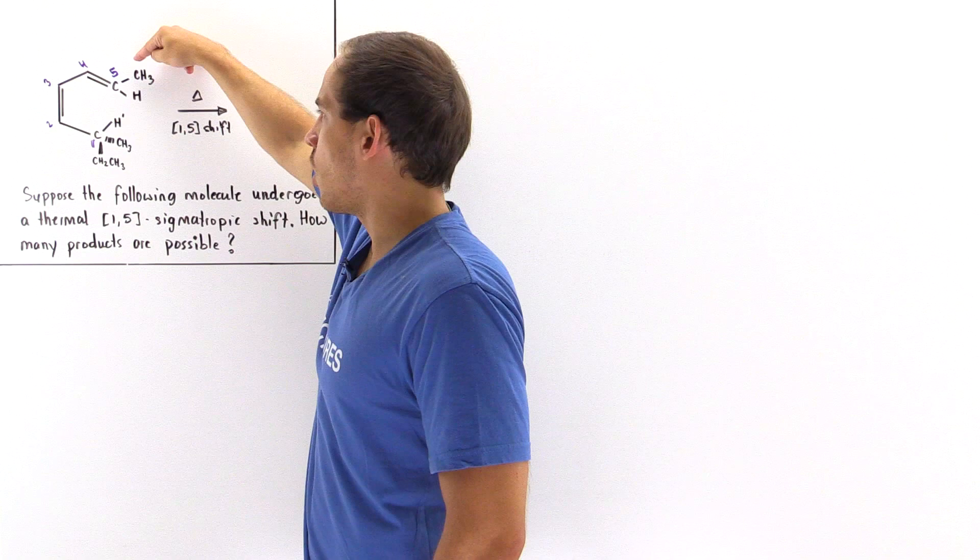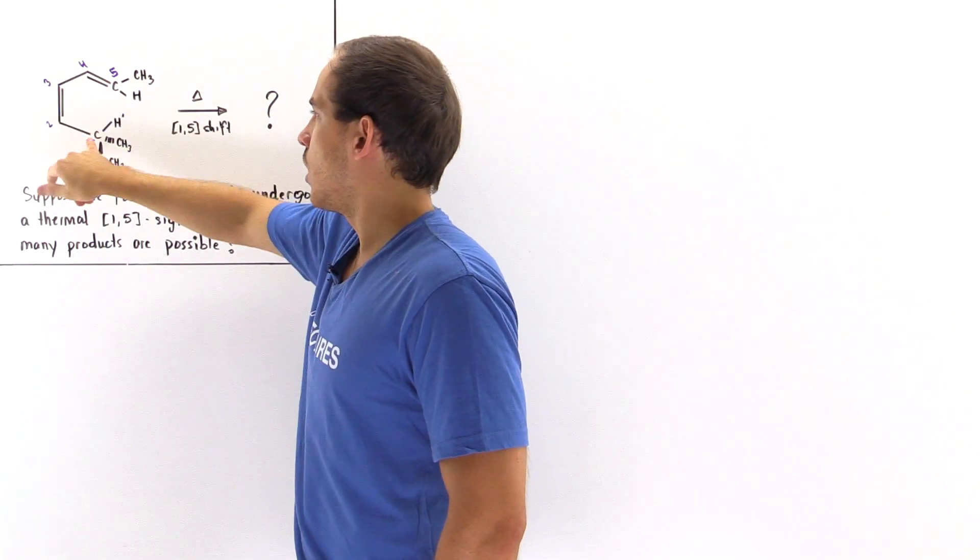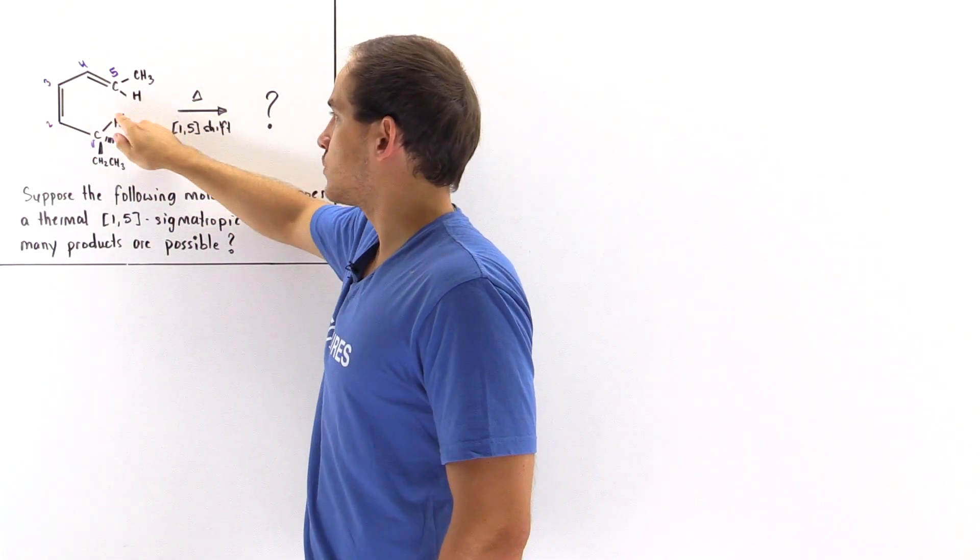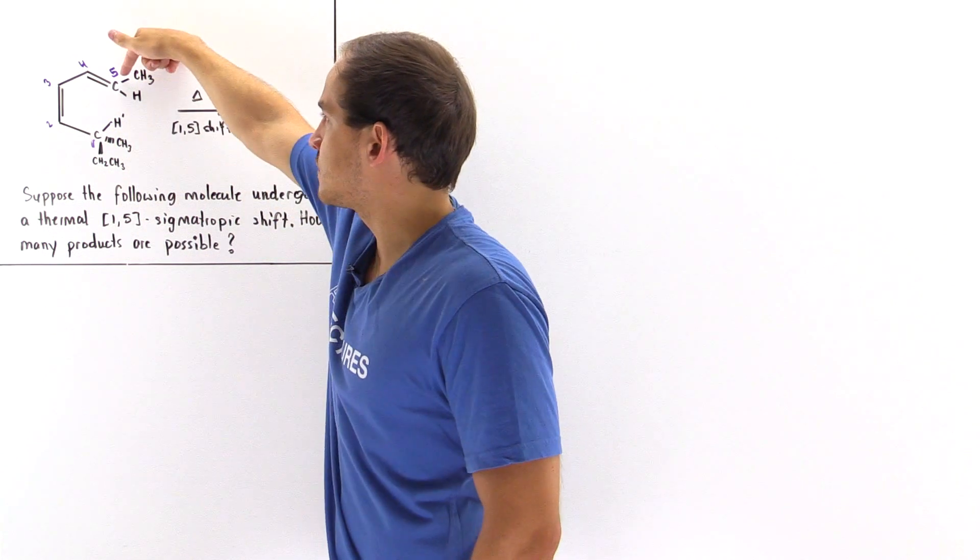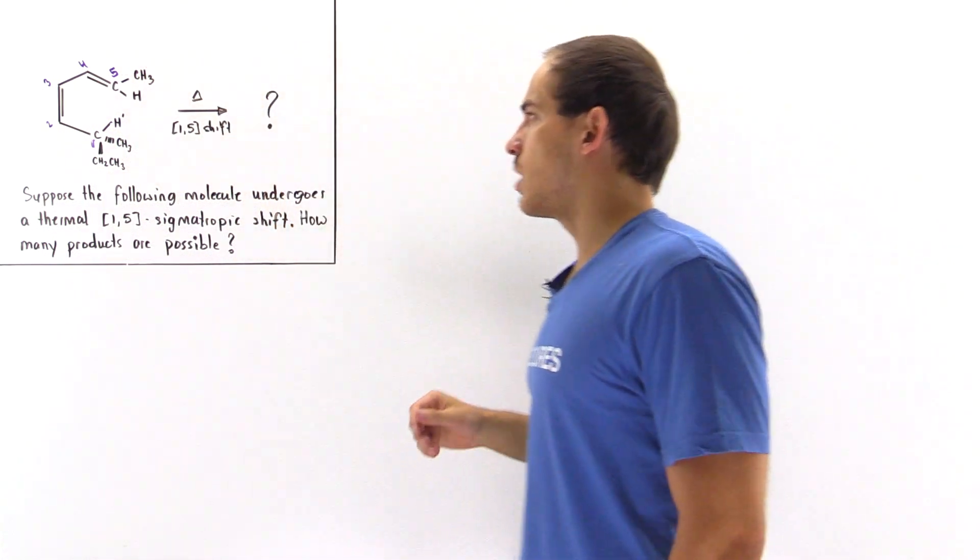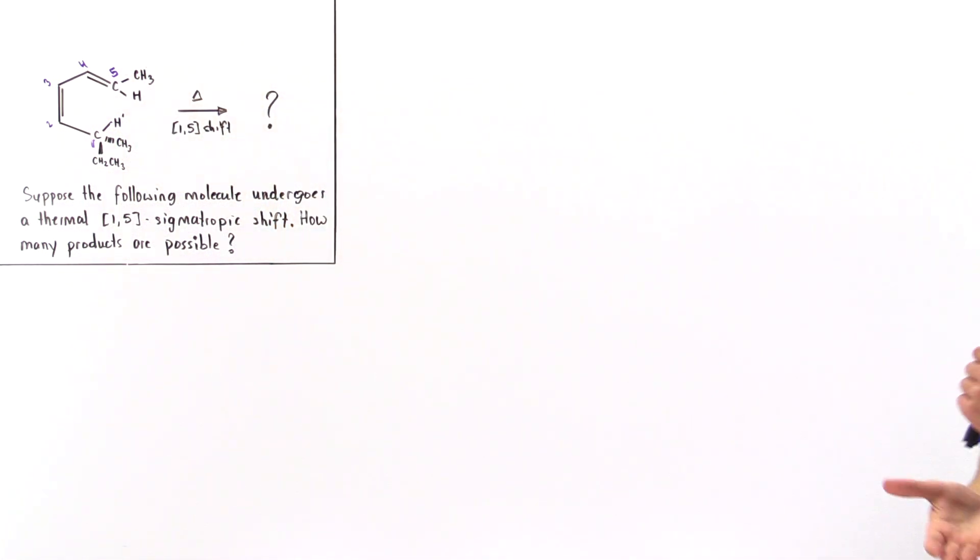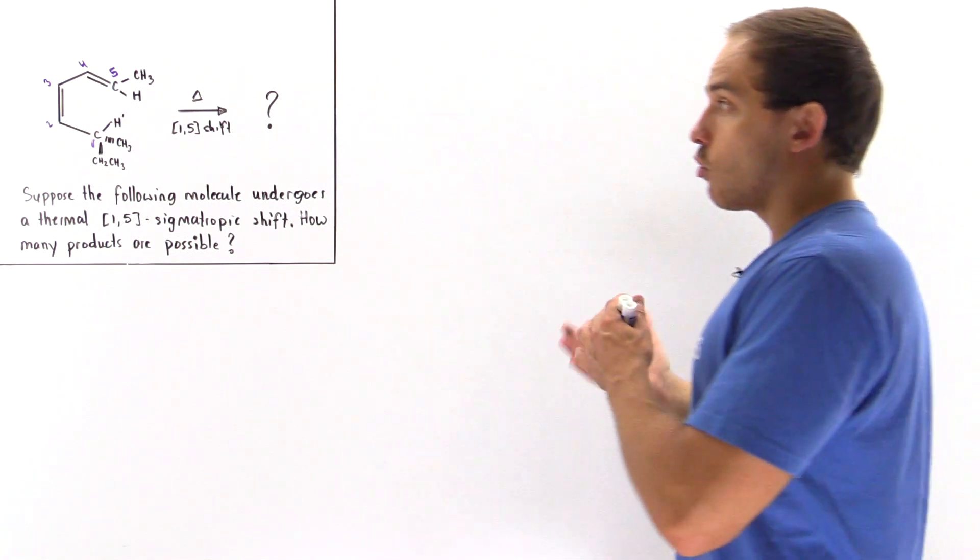So it moves onto the fifth carbon: 1, 2, 3, 4, 5. So this H' will end up on this fifth carbon in the final product. The question is, what are the products that are formed at the end?